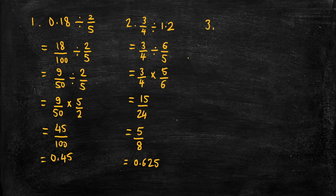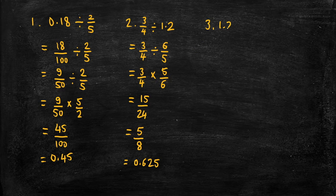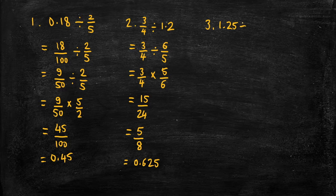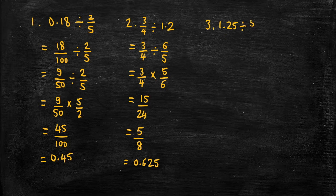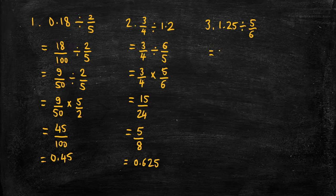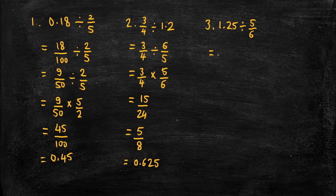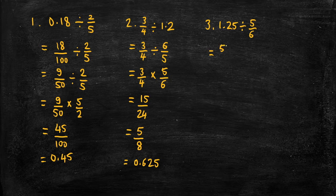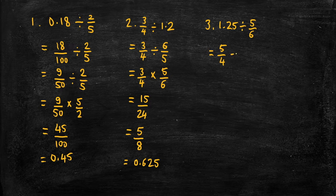Third example, let's do 1.25 divided by 5 sixths. Express the 1.25 as a fraction. So that's 1.25, so 5 over 4, divided by 5 sixths.